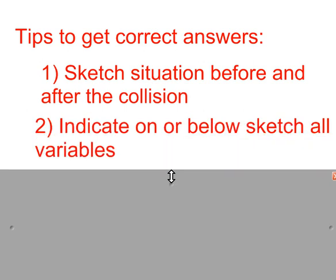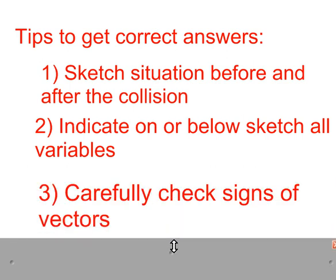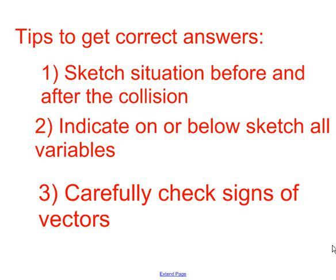Number two: as much as possible, label your sketch with all the variables and information that you have. And number three, and maybe the most important thing, is as you go through your question, make sure that you are constantly ensuring that the sign of your vectors is consistent with the way they're described in the question. So if things are moving to the left, you may want to indicate that that's negative. Make a distinction between things moving in a positive direction and a negative direction.